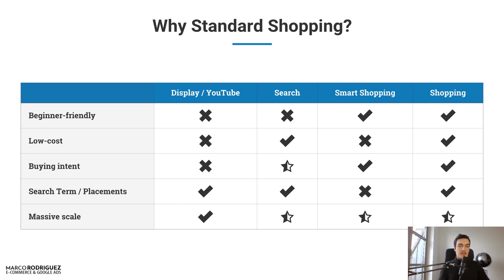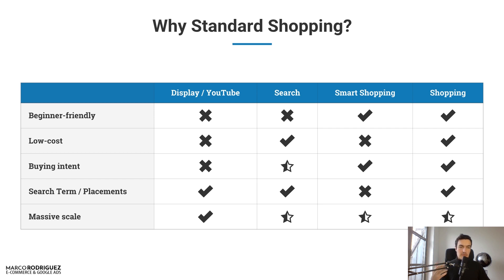Display and YouTube can be scaled more than other campaign types, but standard shopping is more than enough for most businesses. Smart shopping — which is usually the first guess — is not really low cost because you need a lot of data, and data comes through clicks you have to pay for. With standard shopping you can actually analyze what people are searching for; you have insights into search terms and what people enter into Google to find you. With smart shopping from scratch, you'll never have that data.